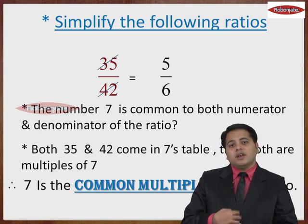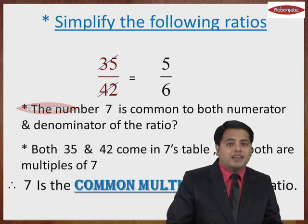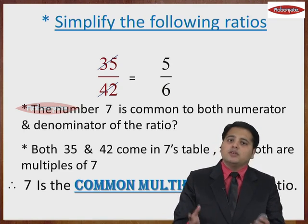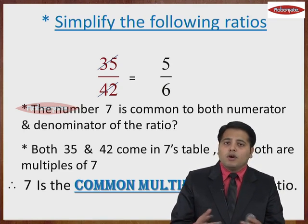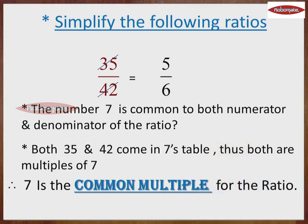So, when we are given the ratios and we have to find out the exact values or the quantities of the 2 terms, what we need to find out is the common multiple.